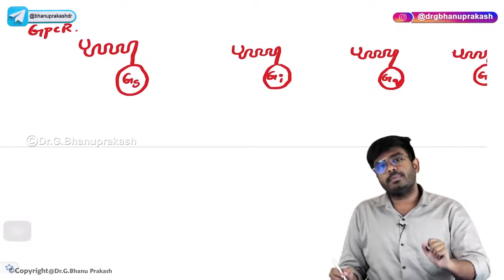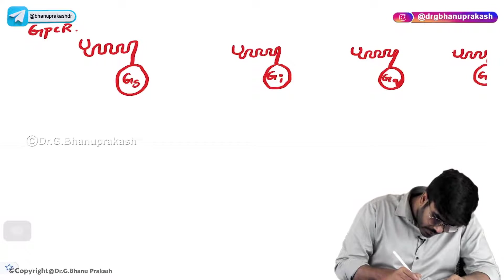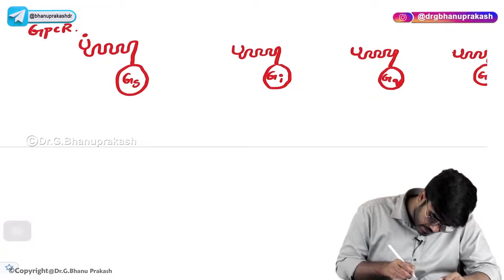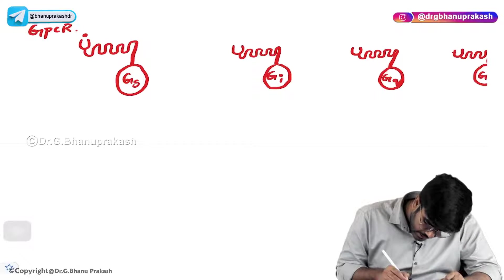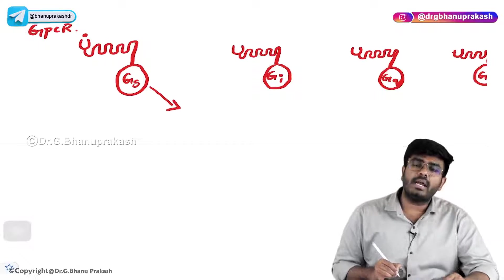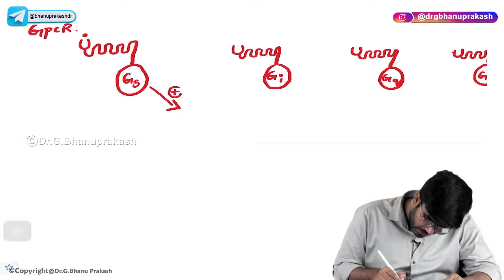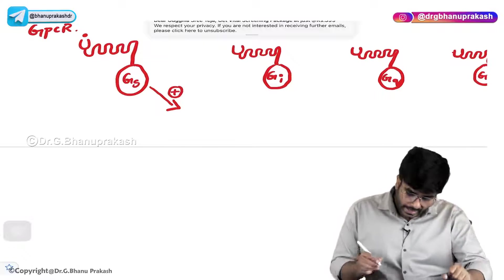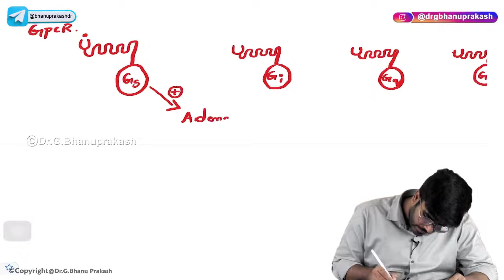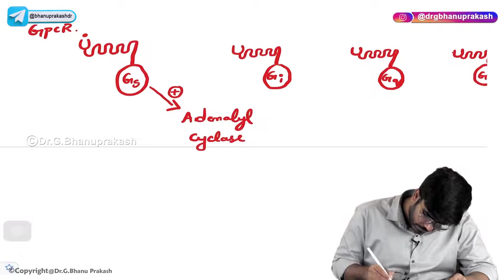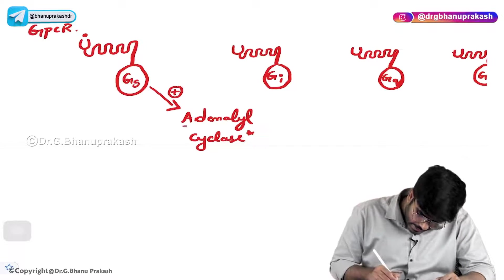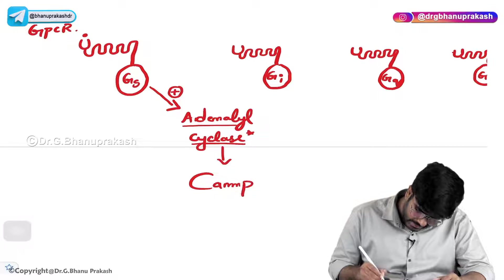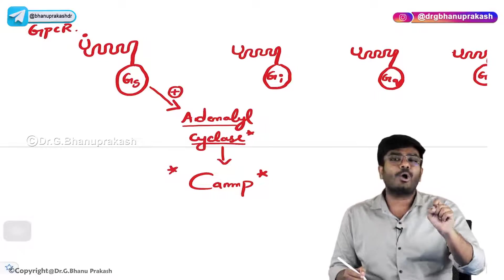What is the difference between having different types of subunits? Whenever you stimulate the Gs type of G protein coupled receptor, the Gs alpha component will detach and move away from beta and gamma. It will utilize the GTP, convert GTP into GDP with energy, and then activate an enzyme called adenylyl cyclase. This adenylyl cyclase helps in the production of cAMP — cyclic AMP. This cyclic AMP is called the secondary messenger.